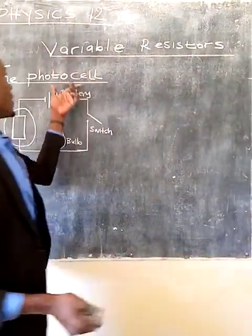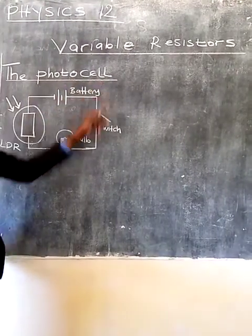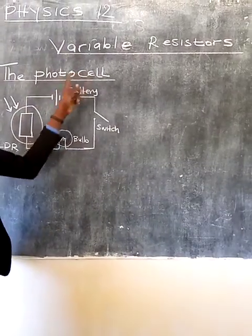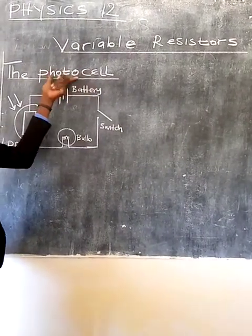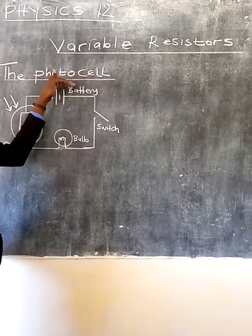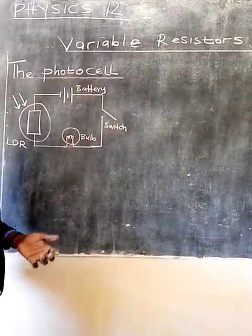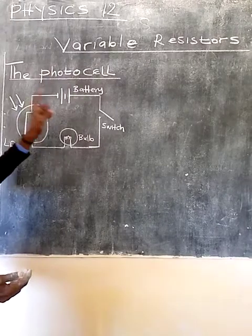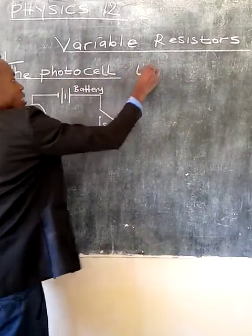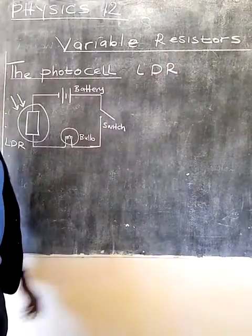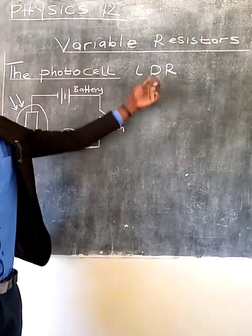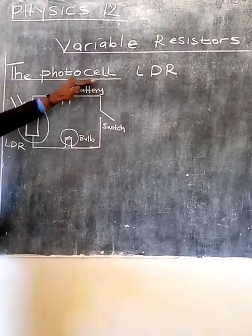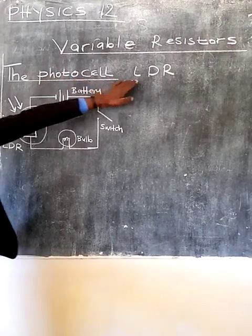We look at the first one, which is the photocell. You need to understand what a photocell is — it is a kind of resistor that depends on light. Photo means light, so this resistor depends on light for its operation. Another term you can use is LDR, which stands for Light Dependent Resistor, meaning it depends on light for its operation. You also need to understand the symbol for a photocell or LDR.